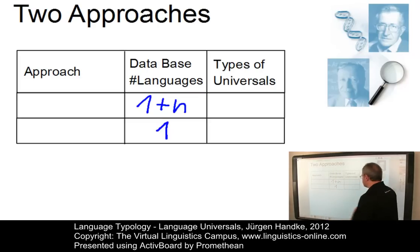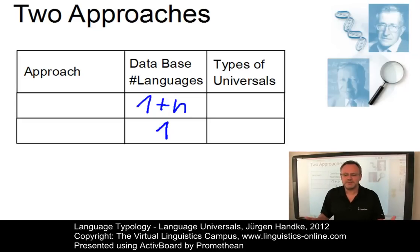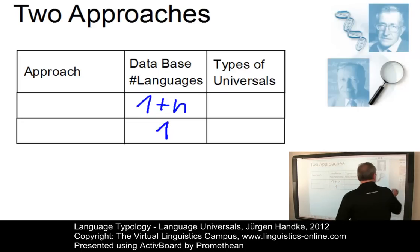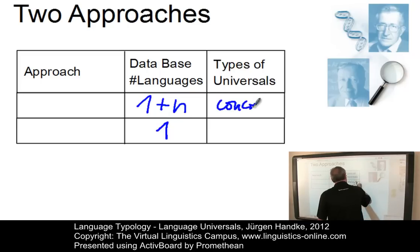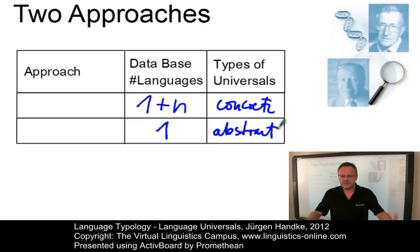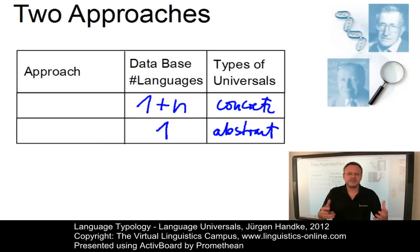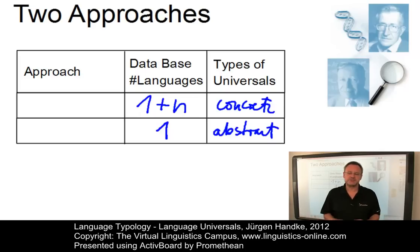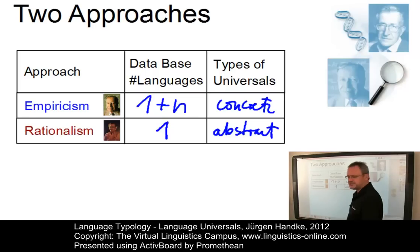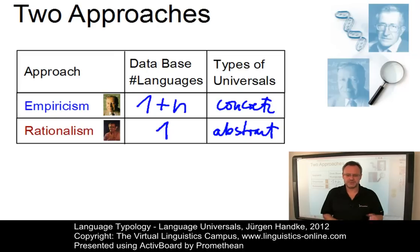A second parameter concerns the formulation of the type of universals — that is, the degree of abstractness. We have the choice between concrete universals that can be empirically tested, and abstract universals relating to general cognition in many cases. The choice of these parameters results in two philosophies concerning universal research in linguistics in general: namely, empiricism and rationalism, by and large associated with two key figures, Joseph Greenberg and Noam Chomsky.